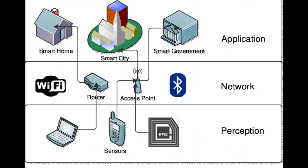A generic high-level architecture composed of three layers has been introduced in the literature. The first is the Perception layer, which represents the physical layer of objects and groups all the features. The second is the Network layer, which represents the communication layer responsible for transmission of data to the application layer through various technologies and protocols. The third is the Application layer, in which the software offering a specific service is actually implemented.